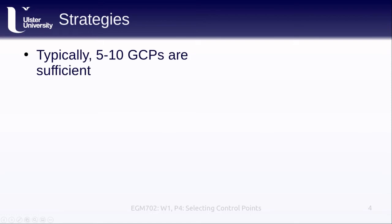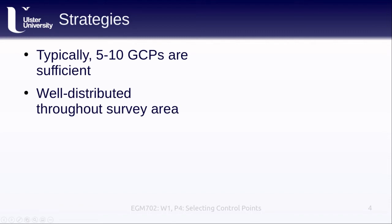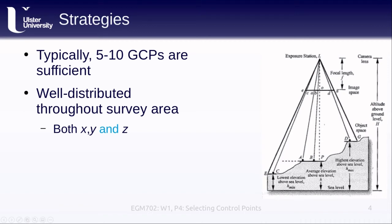Some strategies for setting out control points: typically we need at least five to ten control points to get good, accurate control of a scene. They need to be well distributed through the survey area — and that means both in the X and Y direction, but also in the Z direction. Varying topography means different scales are involved, so we need to estimate scale at different heights, meaning ground control points should be distributed in Z as well.